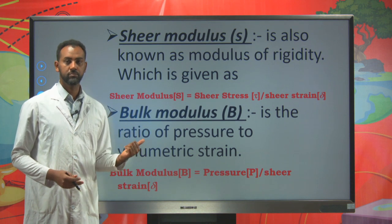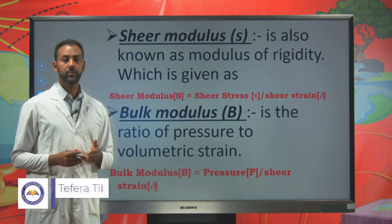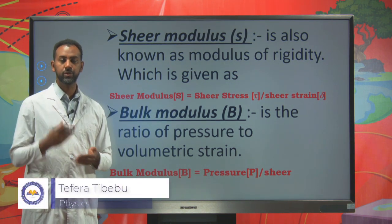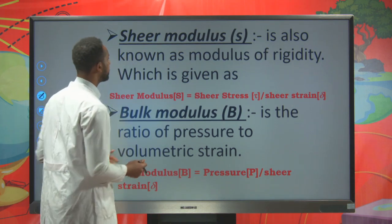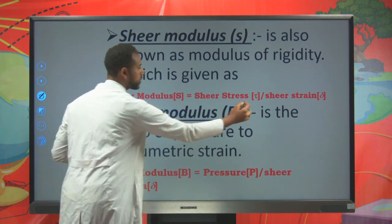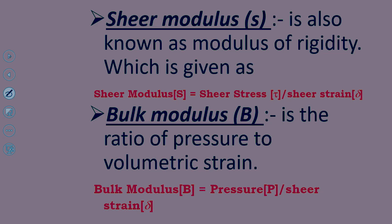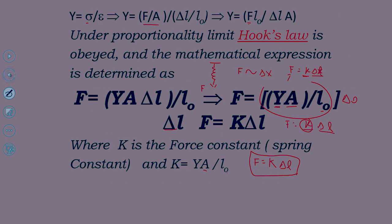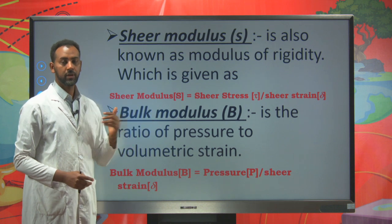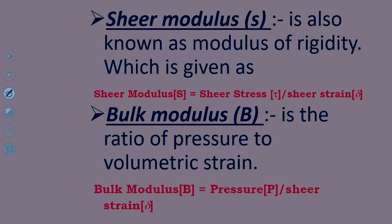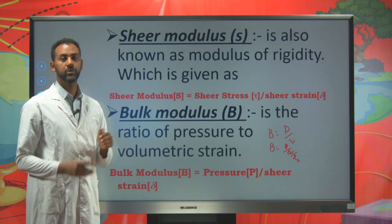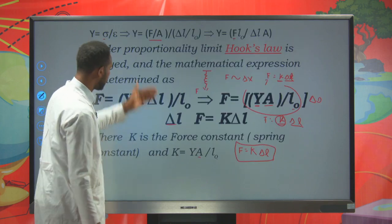Shear modulus, also known as modulus of rigidity, equals shear stress divided by shear strain. Bulk modulus equals pressure divided by volumetric strain — that is, pressure P divided by (ΔV/V₀). So we have three moduli: Young's modulus from tensile stress and strain, shear modulus from shear stress and strain, and bulk modulus from pressure and volumetric strain. The main modulus to focus on is the modulus of elasticity or Young's modulus.